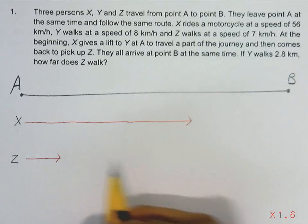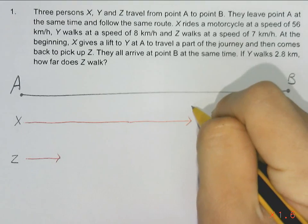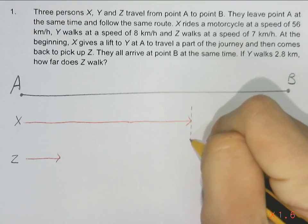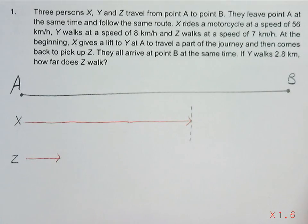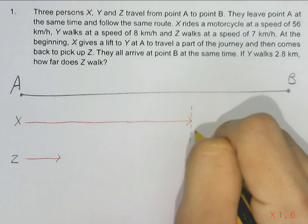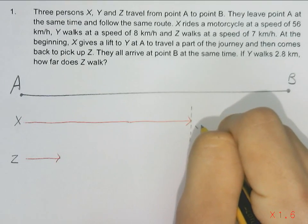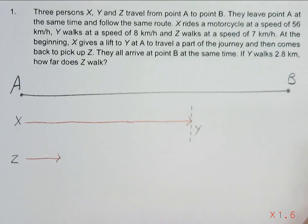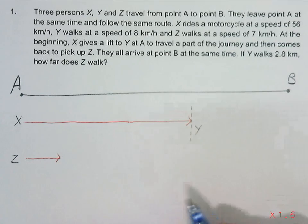X moves towards this point and drops Y off. So Y will continue walking after X has dropped Y off. Now dropping Y off, X will immediately move back in the opposite direction to meet Z.